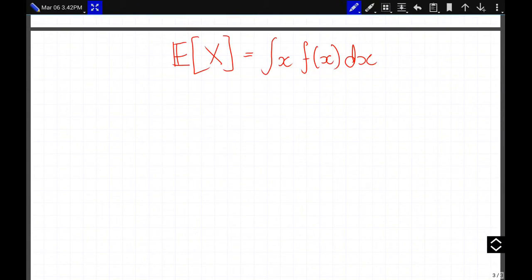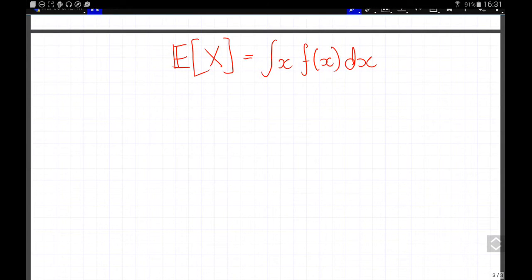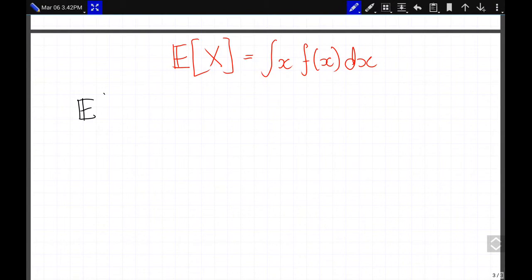So this is our expected value. Now we're going to try and calculate it for our example. So E of x is the integral again from 2 to 4, x times f(x), which is x cubed over 60 dx.